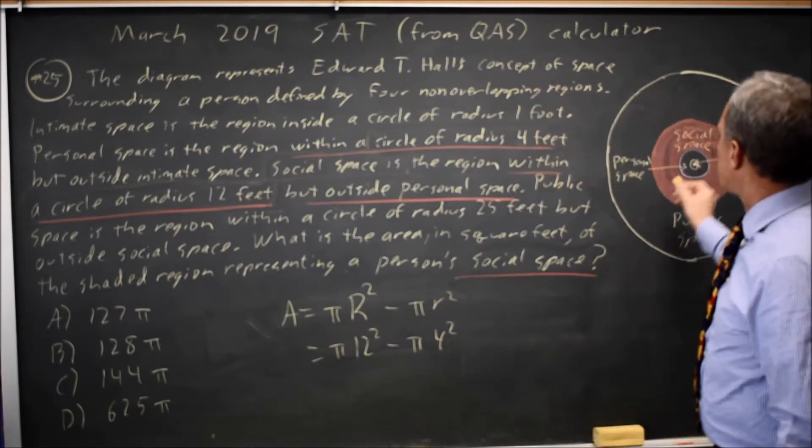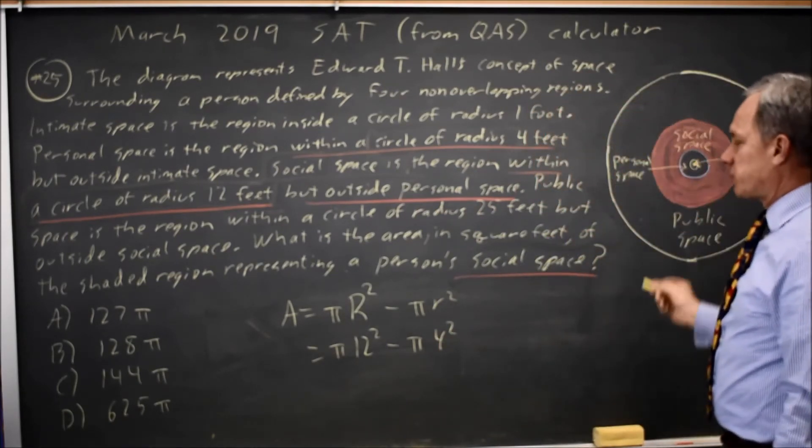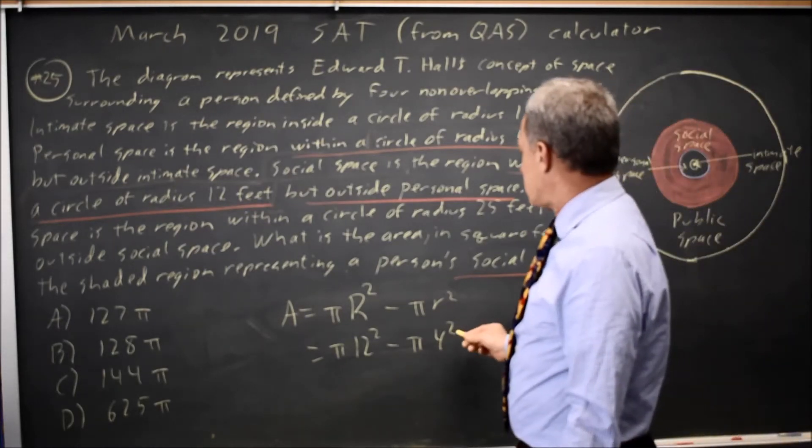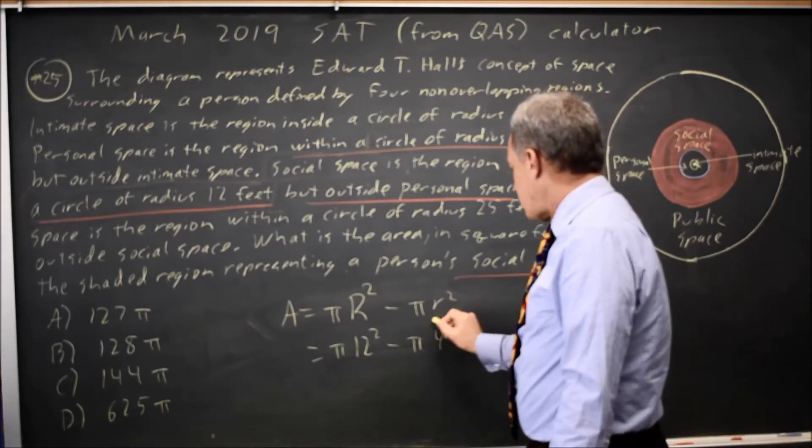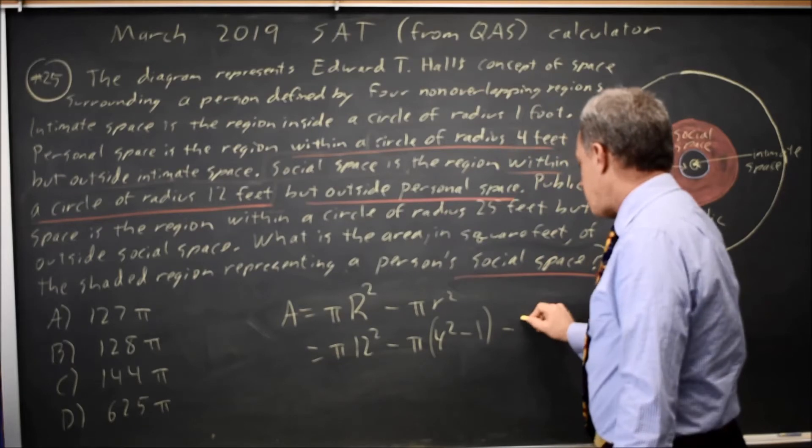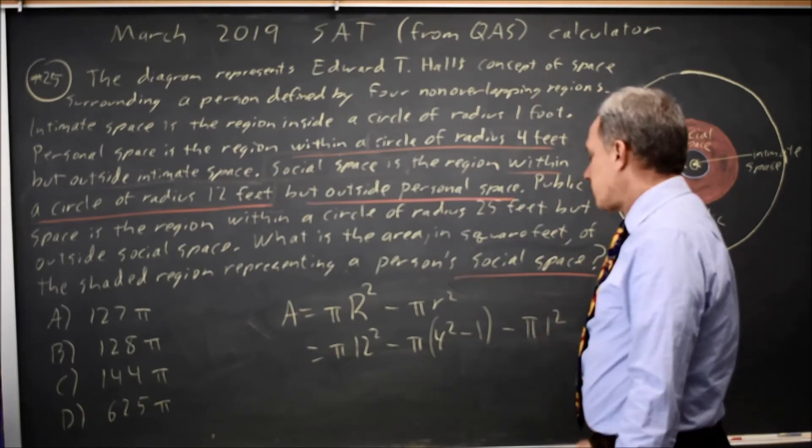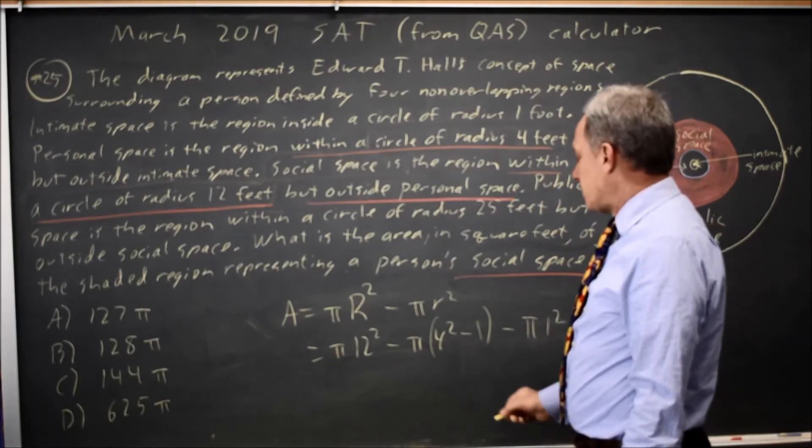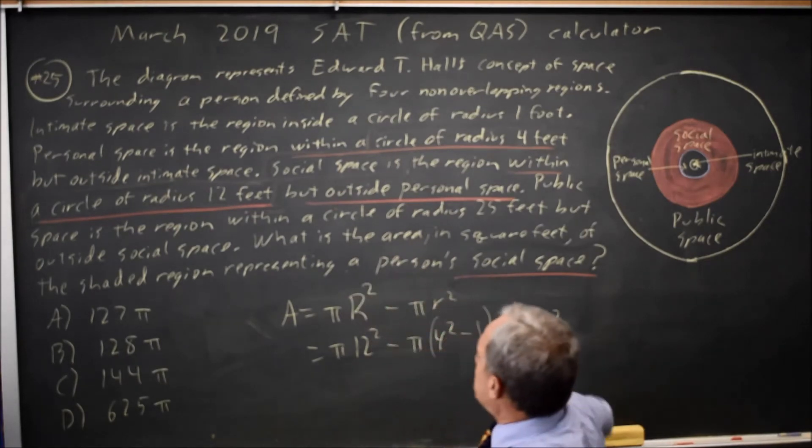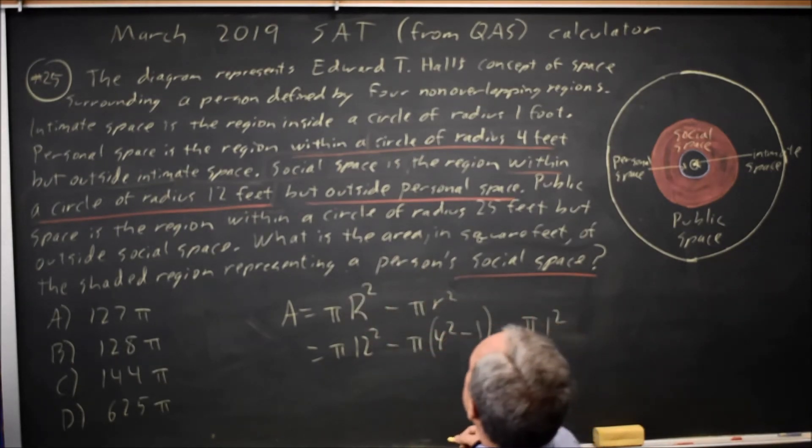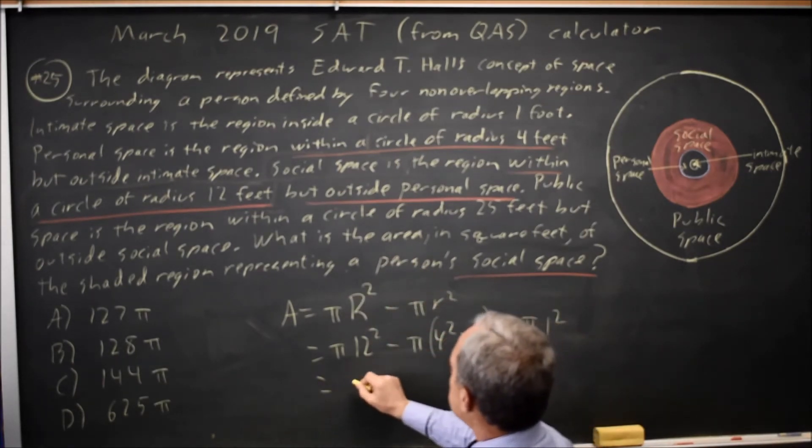I subtract the pi 1 squared for intimate space from personal space, so I would end up with pi 4 squared minus 1, and then minus pi 1 squared. So that's really the same thing as if I just subtract the outer radius for personal space.